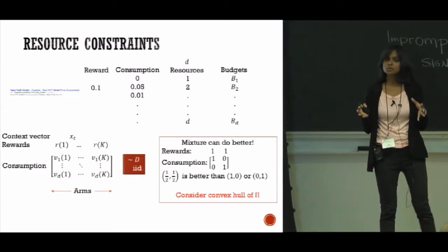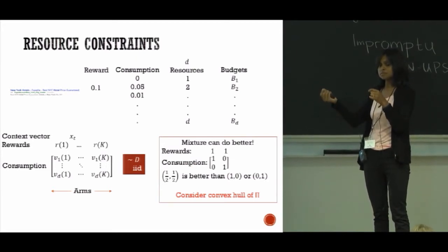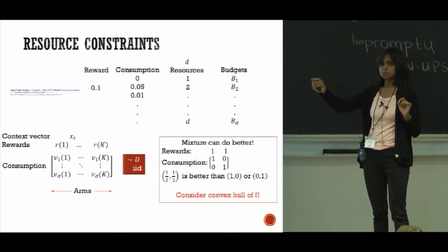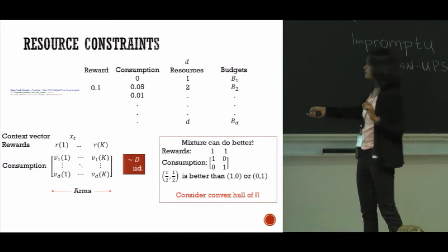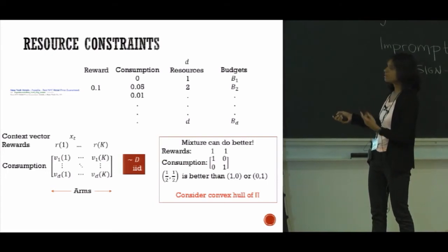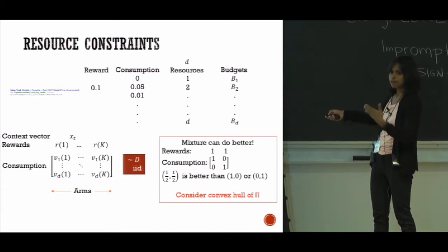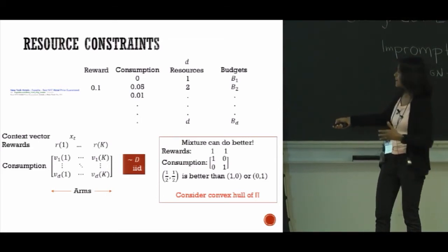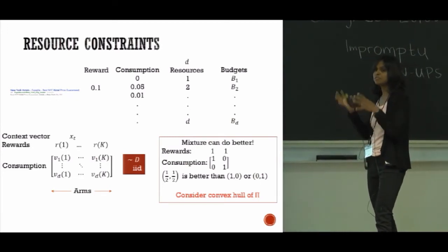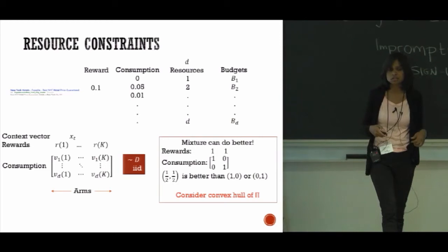One insight into how this makes the problem complicated: earlier when we did not have constraints, you can show that if you have a given policy space, there is always a single best policy which if you use all the time is the optimal thing to do. But with the resource constraints, that is no longer true. Here is a simple example: suppose you had only two policies, both give reward one, but one consumes more of resource one, the other consumes more of resource two. Then actually a mixture of two policies is strictly better than any individual policy. So you should half the time use one policy and half the time use another policy. That is one example of complications introduced by such resource constraints.